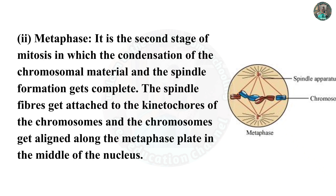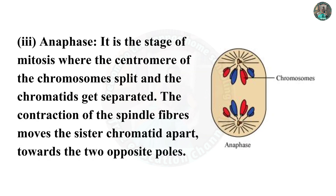B. Metaphase: It is the second stage of mitosis in which condensation of chromosomal material and spindle formation gets complete. The spindle fibers get attached to the kinetochore of the chromosomes, and the chromosomes get aligned along the metaphase plate in the middle of the cell. C. Anaphase: It is the stage of mitosis where the centromere of the chromosomes splits and the chromatids get separated. The contraction of the spindle fibers moves the chromatids apart towards the two opposite poles.